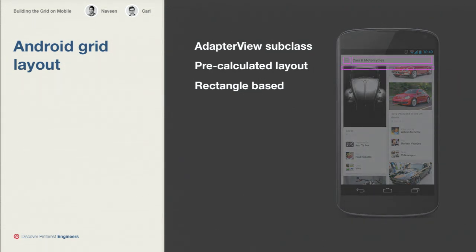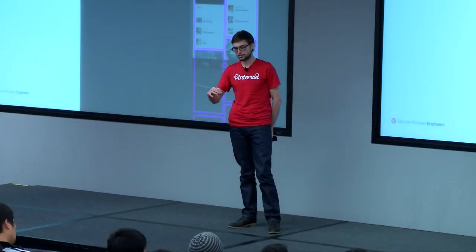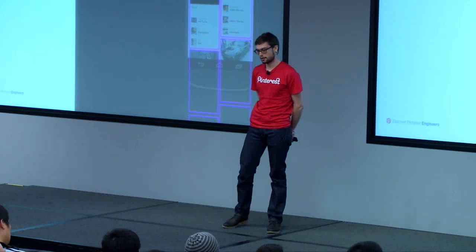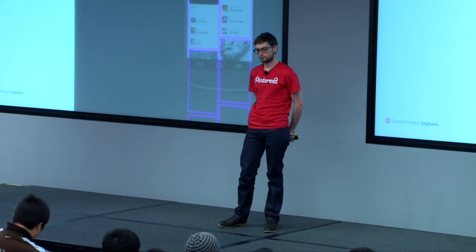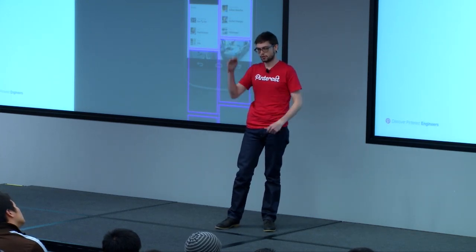For Android specifically, we used an AdapterView subclass. AdapterView is the parent of ListView, GridView, and a couple of others. We built on top of this because it's the standard Android pattern — it's great to be able to swap out the underlying presentation while keeping API compatibility. The big thing we do differently is pre-calculate our layout. With a typical ListView or GridView, as you ask for a cell to be displayed it measures and lays out at that point. But with our non-standard staggered grid, you can't do things so linearly, so we pre-calculate in batches up front. Everything's based on rectangles — you have a viewport as your main rectangle, offset by scroll position, and each cell is backed by a rectangle.